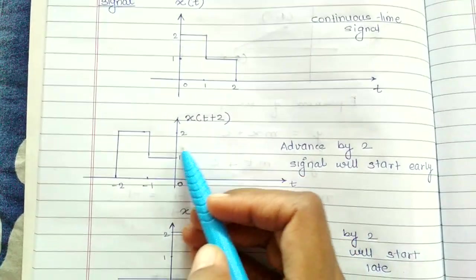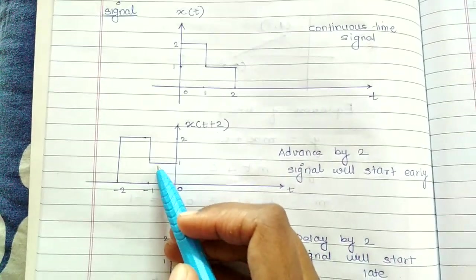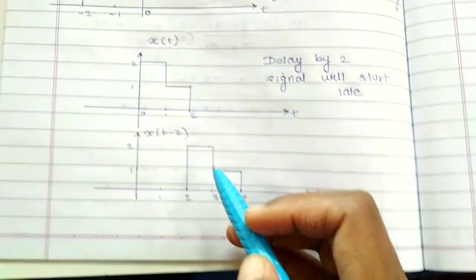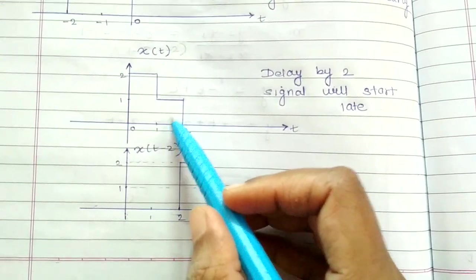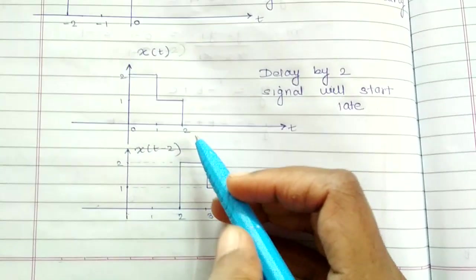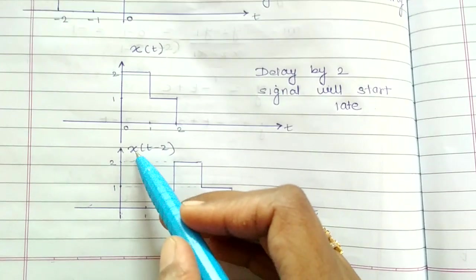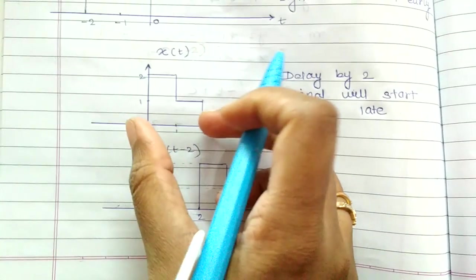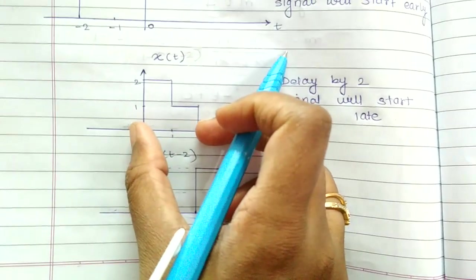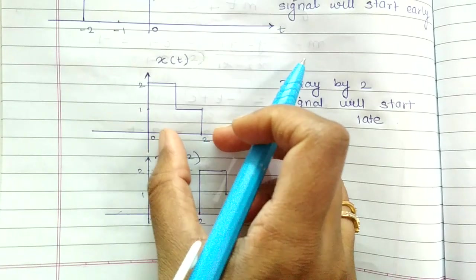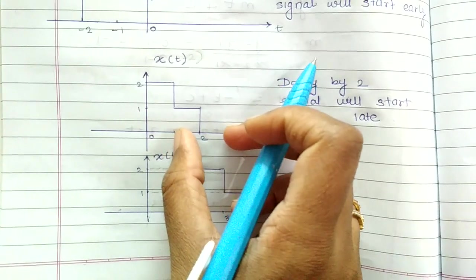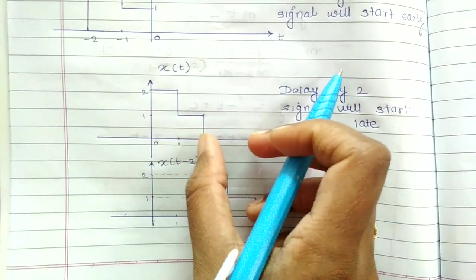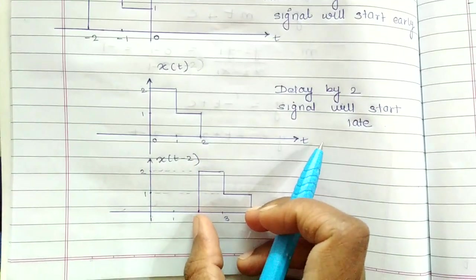So for advance, you will go for left shifting. Similarly, for the delay signal — suppose this is X(t) — if we are supposed to draw X(t−2), we will simply shift this signal by two units. This is one shift and this is two shifts, so the same signal will appear shifted to the right.